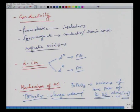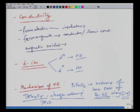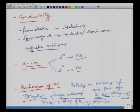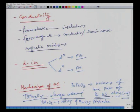In TbMn₂O₅, it is charge ordering that causes ferroelectricity. In YMnO₃, tilting of MnO₅ polyhedra is responsible for ferroelectricity rather than central B-ion displacement. So the mechanism of ferroelectricity in multiferroics is no longer limited to central displacement — it can be charge ordering, polyhedra tilting, or other mechanisms.